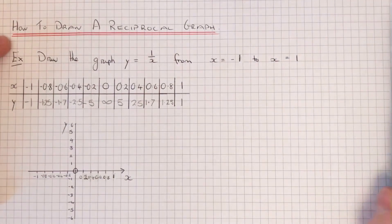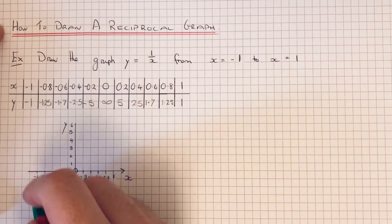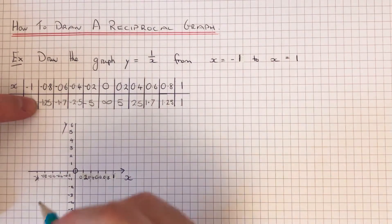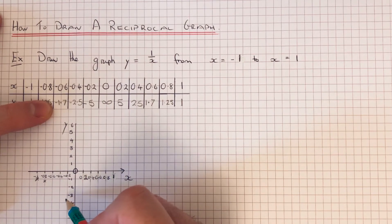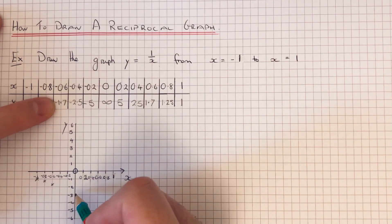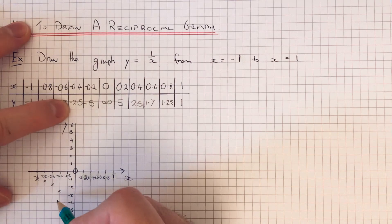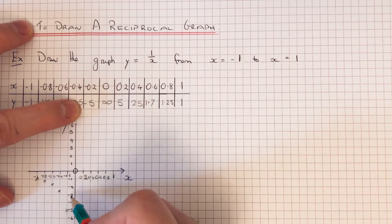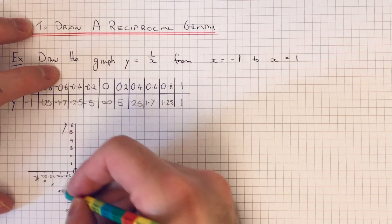Ok so we've got all our points there so we've just now got to plot these on our graph. Our first one was x is minus 1 gave us minus 1, when x was minus 0.8 we got minus 1.25, when x was minus 0.6 we got minus 1.7, when x was minus 0.4 we got minus 2.5, when x was minus 0.2 we got minus 5, and 0 gave us infinity so it's converging to the y-axis.